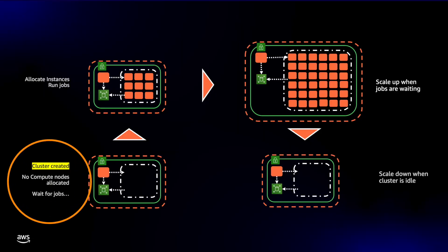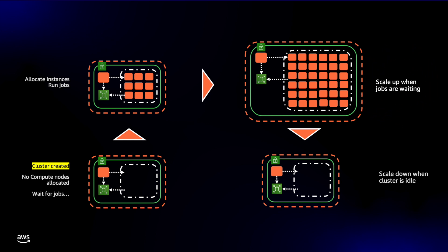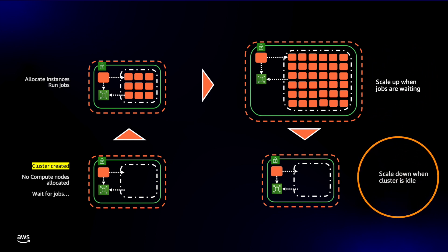Slurm queues and EC2 combine together to give you on-demand scaling. Your cluster can sit waiting with just a head node until jobs are submitted. Slurm will detect those waiting jobs and spin up nodes to process them. And when the work is finished, the cluster will scale back down to zero — this way you only pay for as much AWS as your jobs need.